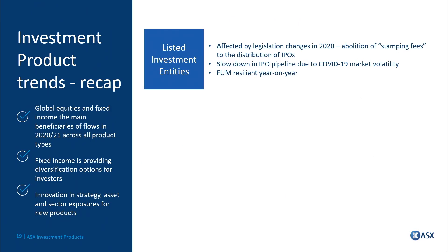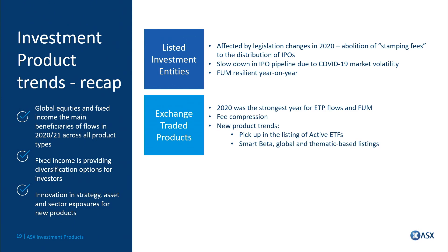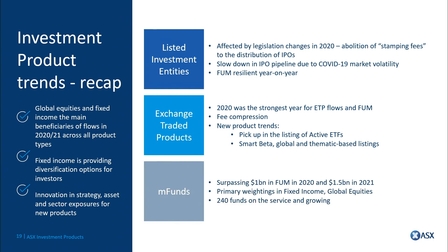Just a quick recap: listed investment companies and trusts have had a tough time over the last 12 months, but there's some optimism going forward with products in the pipeline. Exchange traded products continue to go from strength to strength. While we have seen a trend around fee compression, at the margin we're starting to see increasing use of active ETFs. And M-Fund is now at $1.7 billion with 240 funds on the service, providing investors the ability to achieve diversification.